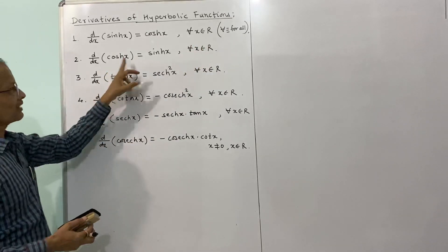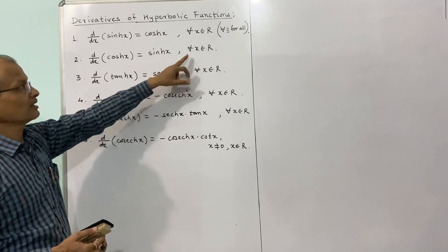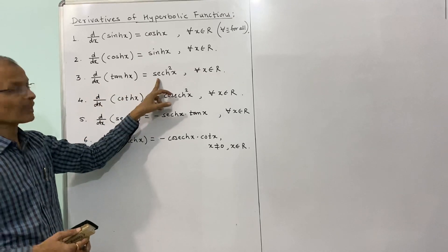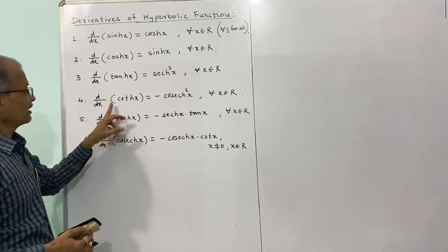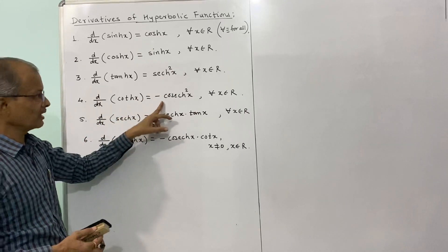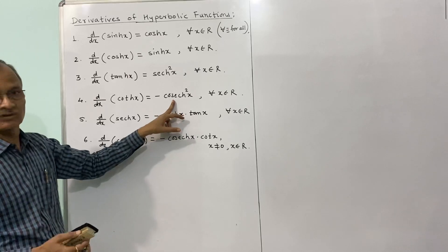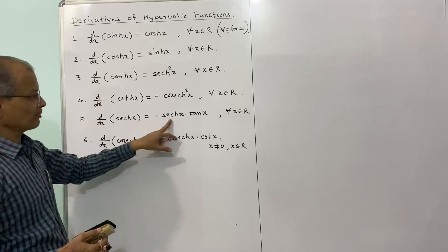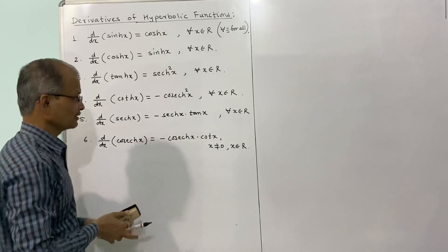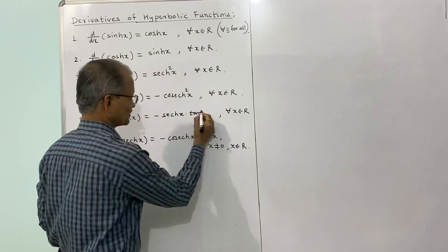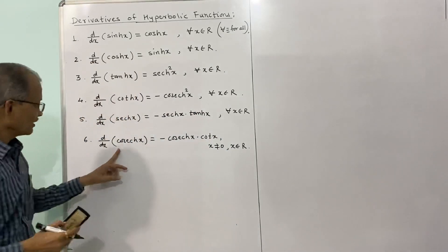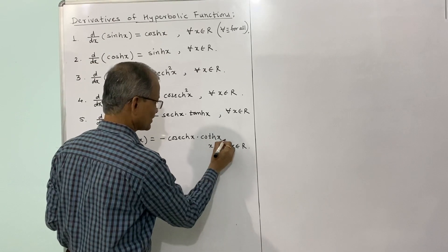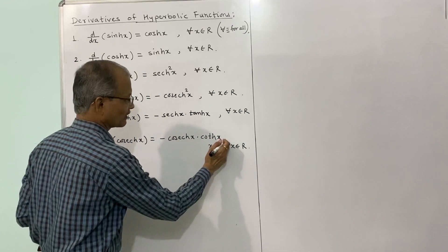The derivative of hyperbolic cos x is equal to hyperbolic sin x, and this holds for all real numbers x. The derivative of hyperbolic tan x is equal to hyperbolic sech squared x. The derivative of hyperbolic cot x is equal to negative hyperbolic cosech squared x. The derivative of hyperbolic sec x is equal to negative hyperbolic sec x times hyperbolic tan x. These are the formulas we have to prove.